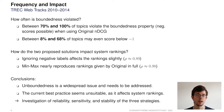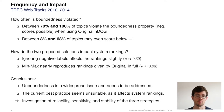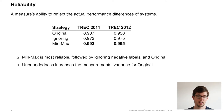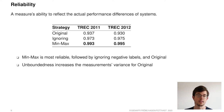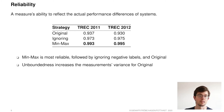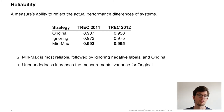For an in-depth comparison, we now compare these three strategies with regards to reliability, stability, and sensitivity of the measurements. The reliability of a measure is its ability to reflect the actual performance differences of systems, calculated as the portion of resulting measurements attributable to actual differences in system effectiveness, as opposed to topics, annotation, or interaction effects. Showcased here are reliability scores for Track 2011 and Track 2012. Min-max is the most reliable strategy, followed by ignoring negative labels and original NDCG. Its unboundedness increases measurement variance for the original strategy, which is detrimental to reliability.